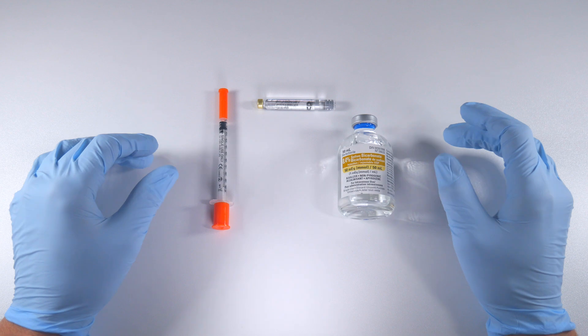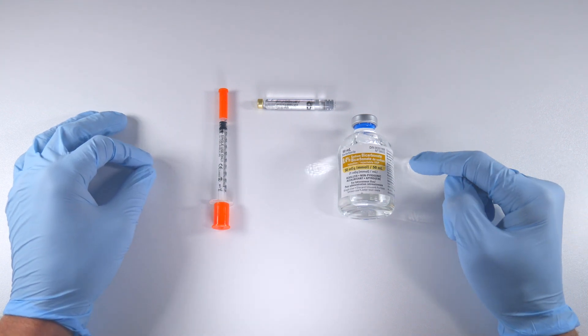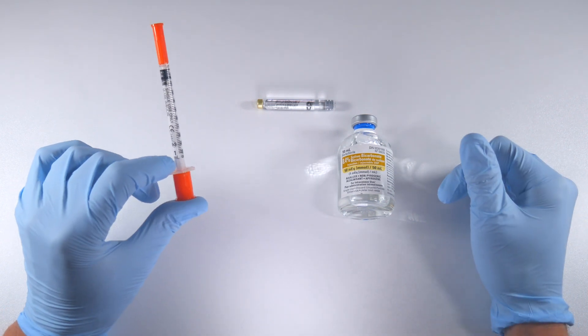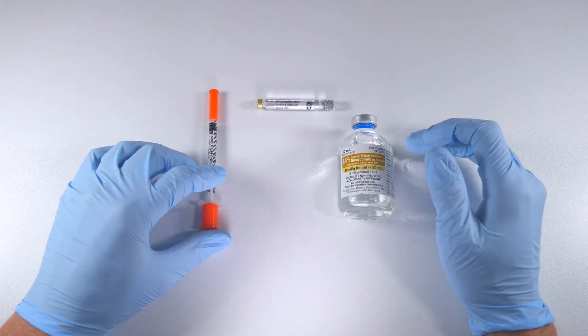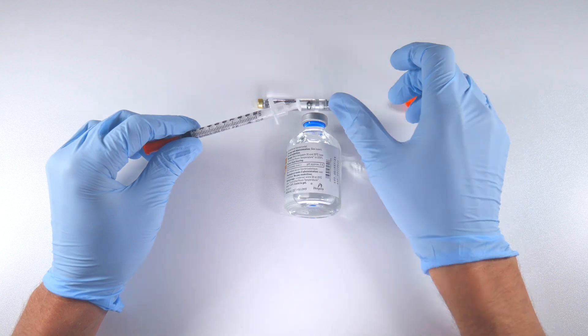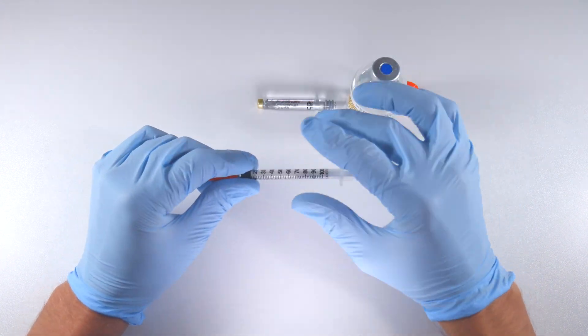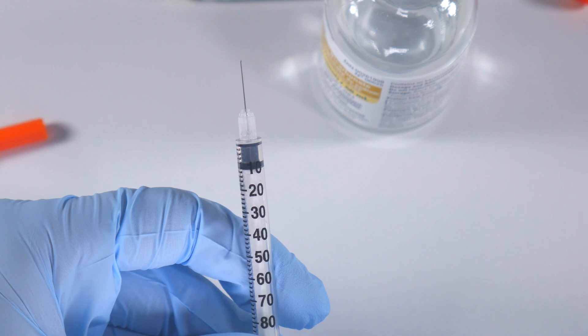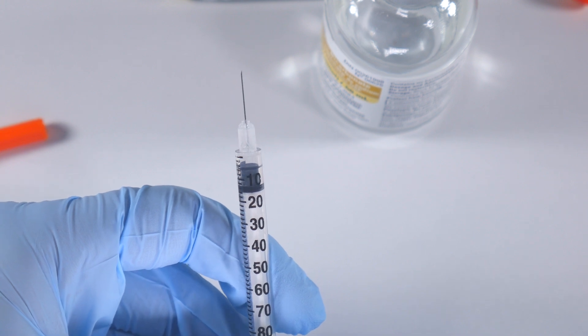Again, we've got our one mil syringe, we've got our sodium bicarbonate. What you do is essentially you pull off these caps—it's going to roll away—and you expose the needle.